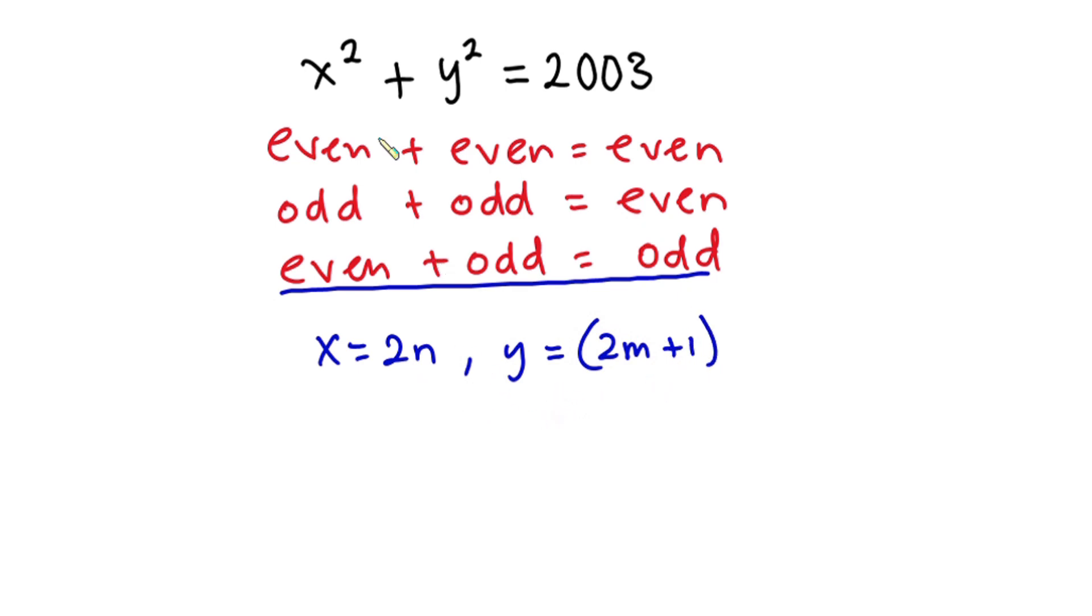Now let's go ahead and then plug these values into the original equation. So that we get (2n)² plus (2m plus 1)². And this is equal to 2003.